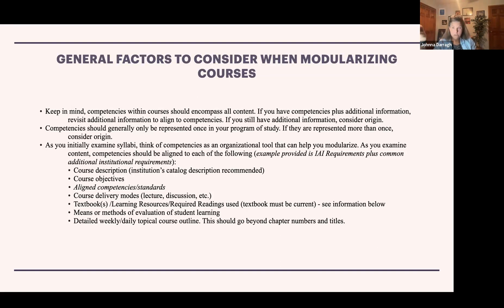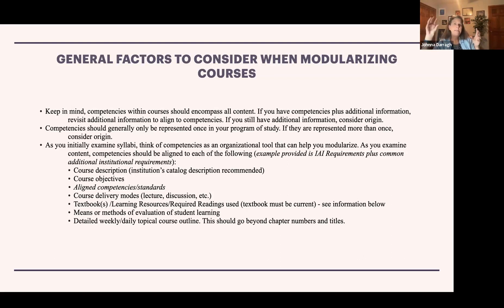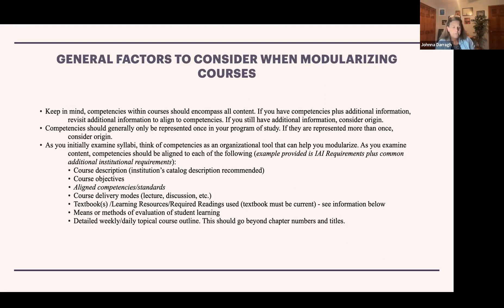One possible reason a competency is represented multiple times is that you've touched on it throughout the curriculum, but in the context of competencies we're assuming attainment before we go on. Another reason it might be listed more than once is if you have competencies aligned to different pathways — for example, at the community college level, competencies aligned to both an AAS pathway and an AA pathway. Ideally, if a student has attained particular competencies in one course, they're not retaking them in another. That's a redundancy we want to be careful of.